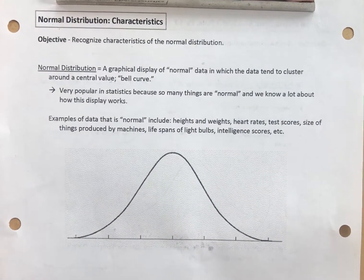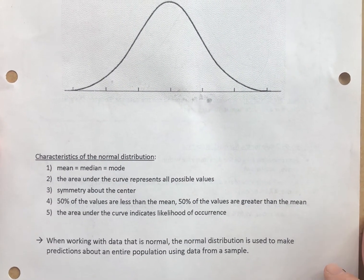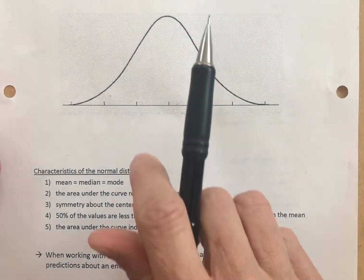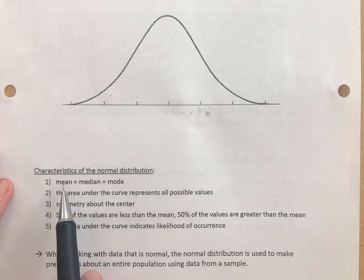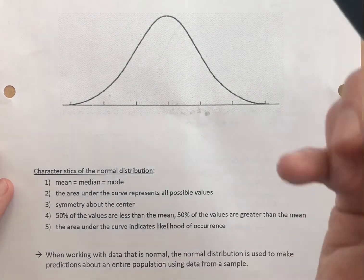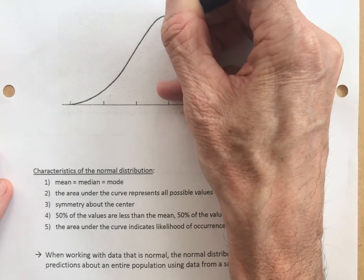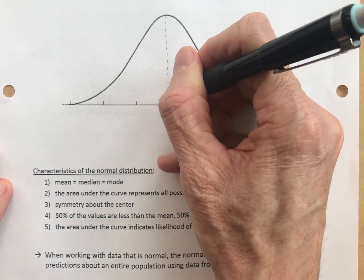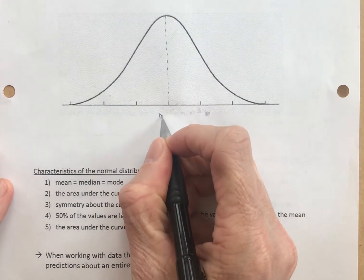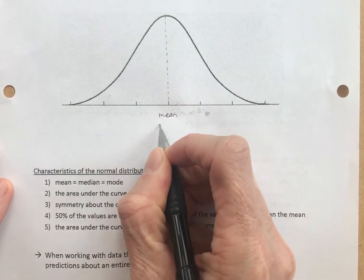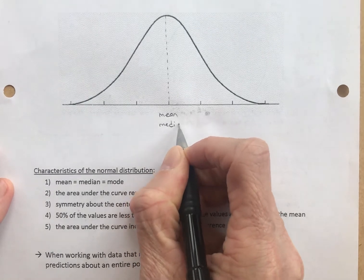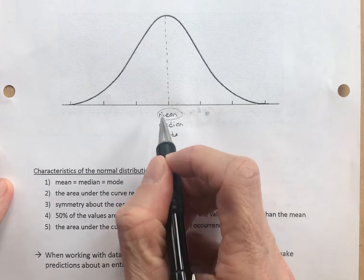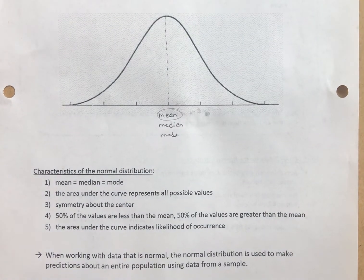Characteristics of this normal distribution include the following. The mean equals the median equals the mode. I'm going to draw a line right down here from the apex or the top of the distribution. This is the mean, which equals the median, which equals the mode. In the normal distribution, we focus on the mean of the data.